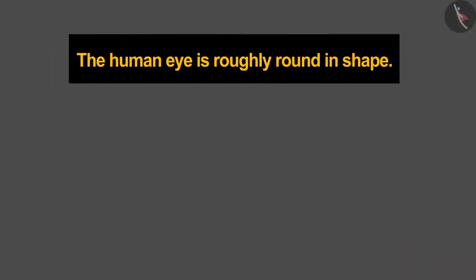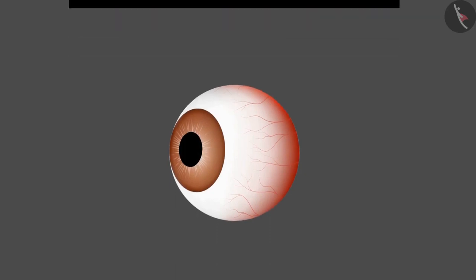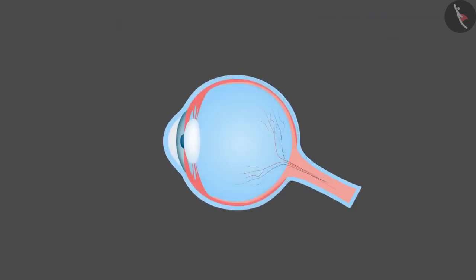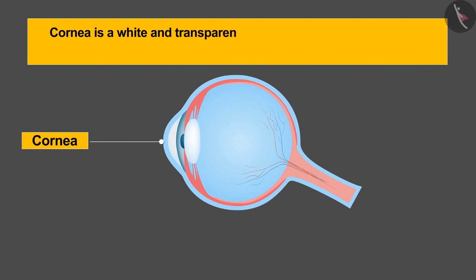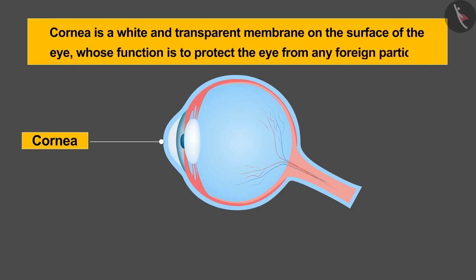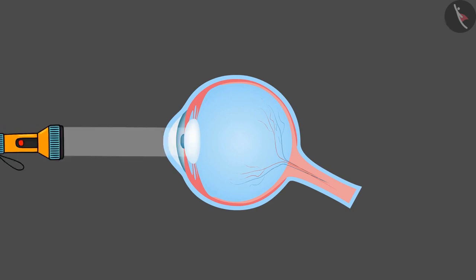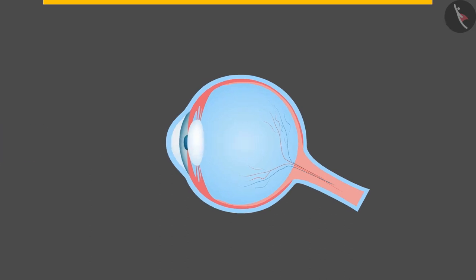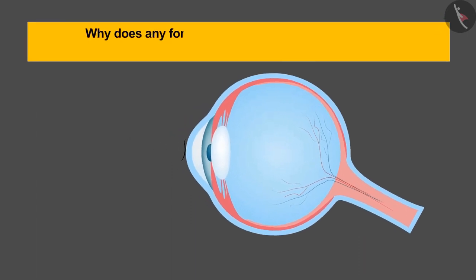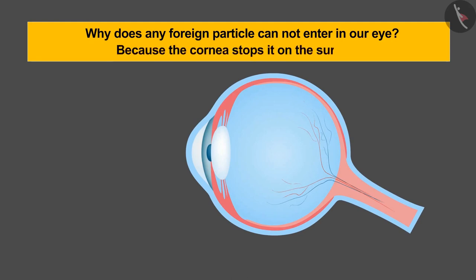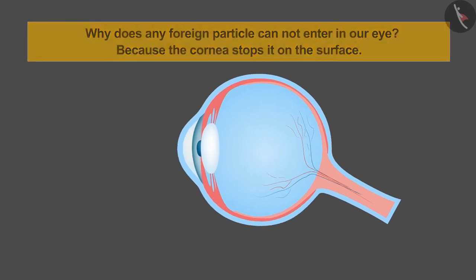The human eye is roughly round in shape. The first part of the eye is called cornea. Cornea is a white and transparent membrane on the surface of the eye whose function is to protect the eye from any foreign particle. Being transparent, only light can enter into the eye. Have you ever thought why any foreign particle cannot enter in our eye? Because the cornea stops it on the surface.